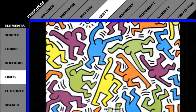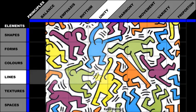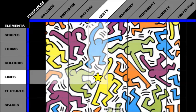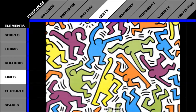Keith Haring used lines to create unity. The lines are the same color, the same width, and used consistently throughout his artwork.